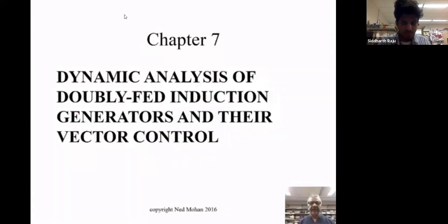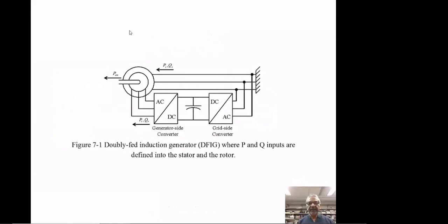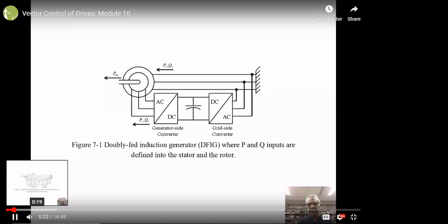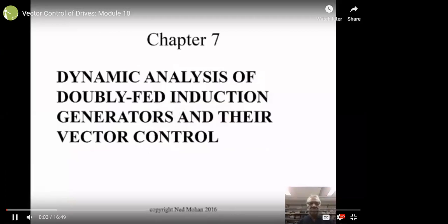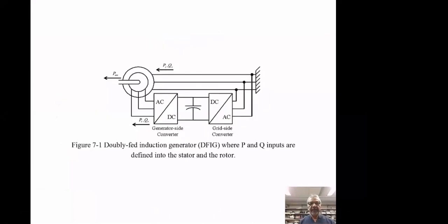In this chapter we'll look at doubly-fed induction generators and their vector control. We see the schematic of a DFIG — doubly-fed induction generator — where the stator is directly connected to the grid, perhaps through a transformer which is not shown. There is power electronics in the rotor circuit that supplies slip frequency currents to the rotor windings. In this case both real power and reactive power are taken to be entering the machine.